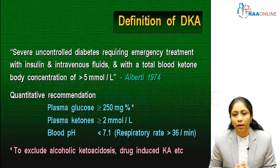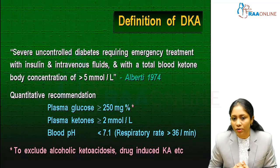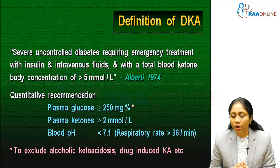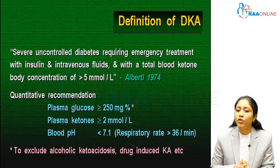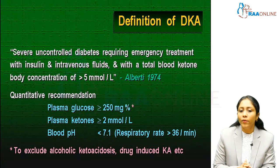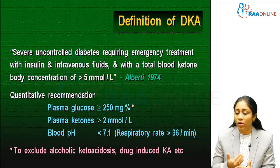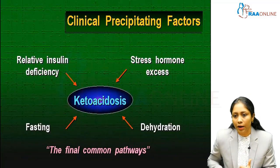We will deal with DKA in more detail. Diabetic ketoacidosis is severe uncontrolled diabetes requiring emergency treatment with insulin and intravenous fluids, with a total blood ketone body concentration of more than 5 millimoles per liter. The key numbers: plasma glucose more than 250 mg/dL, ketones more than 2 millimoles, blood pH less than 7.1, and respiratory rate more than 36 per minute. We must exclude alcoholic ketoacidosis and drug-induced ketoacidosis before confirming the diagnosis.